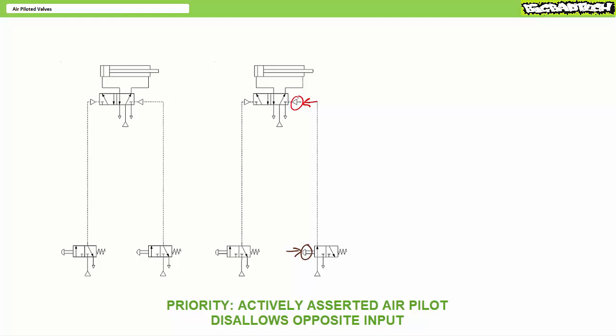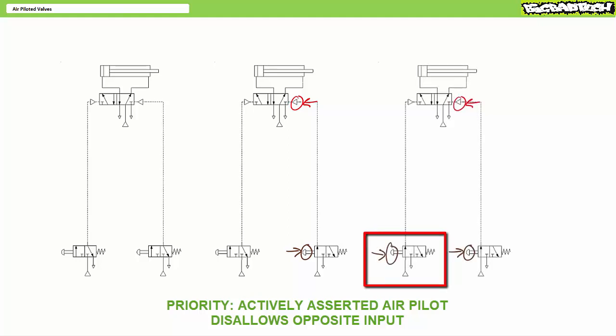Rather than releasing push button two, operator two instead keeps it pressed down and the air pilot on the right-hand side remains pressurized. Along comes operator one, angry that the cylinder was told to extend, and presses push button one on the left-hand side, which again sends an air pilot signal to the valve. However, because the air pilot on the right-hand side remains pressurized, the spool doesn't shift and the cylinder remains retracted. Taking advantage of operator one's absence, operator two has now assumed priority.